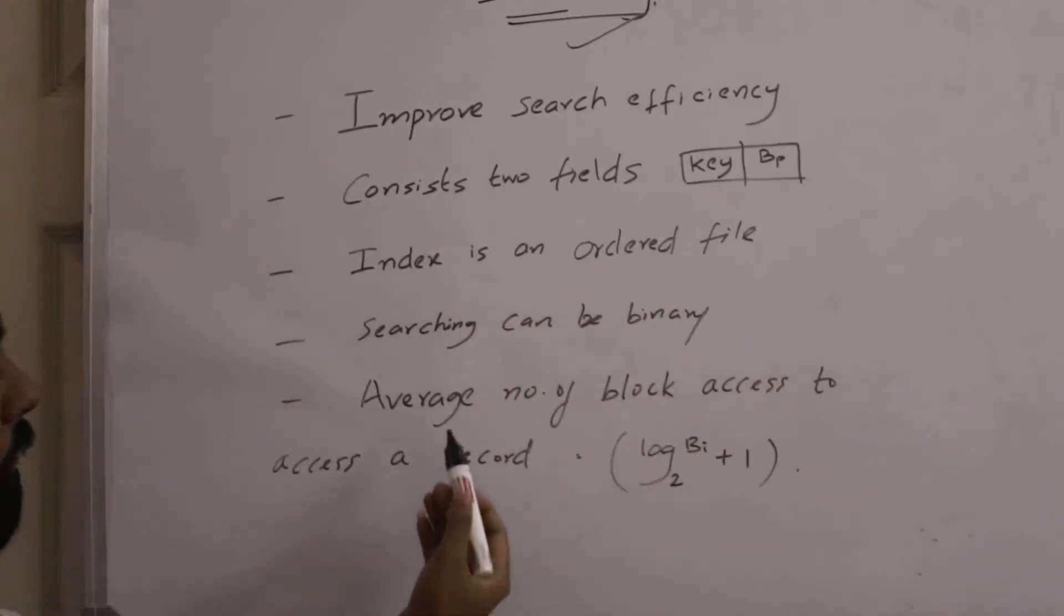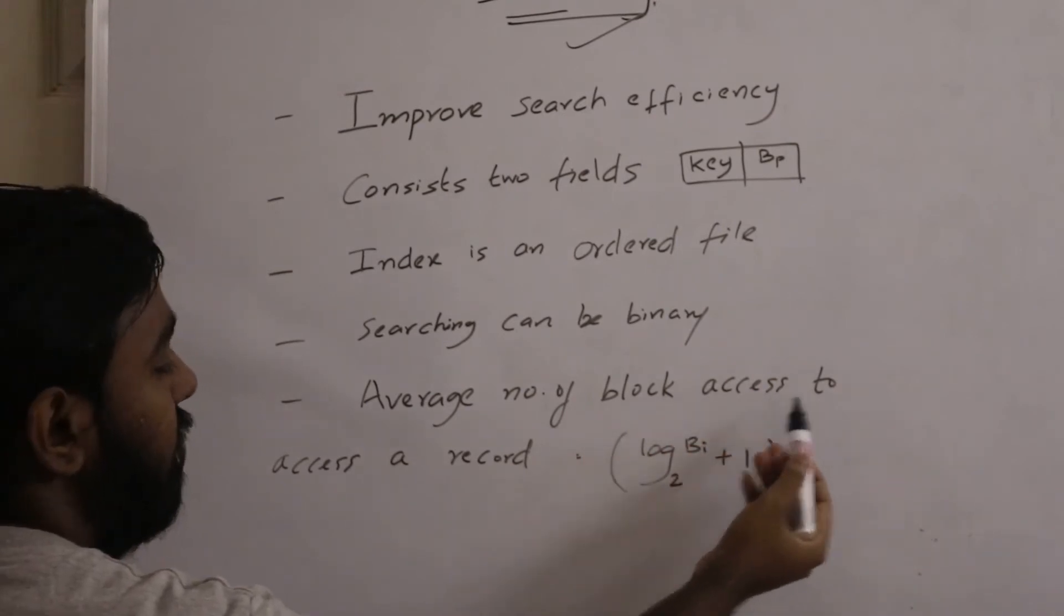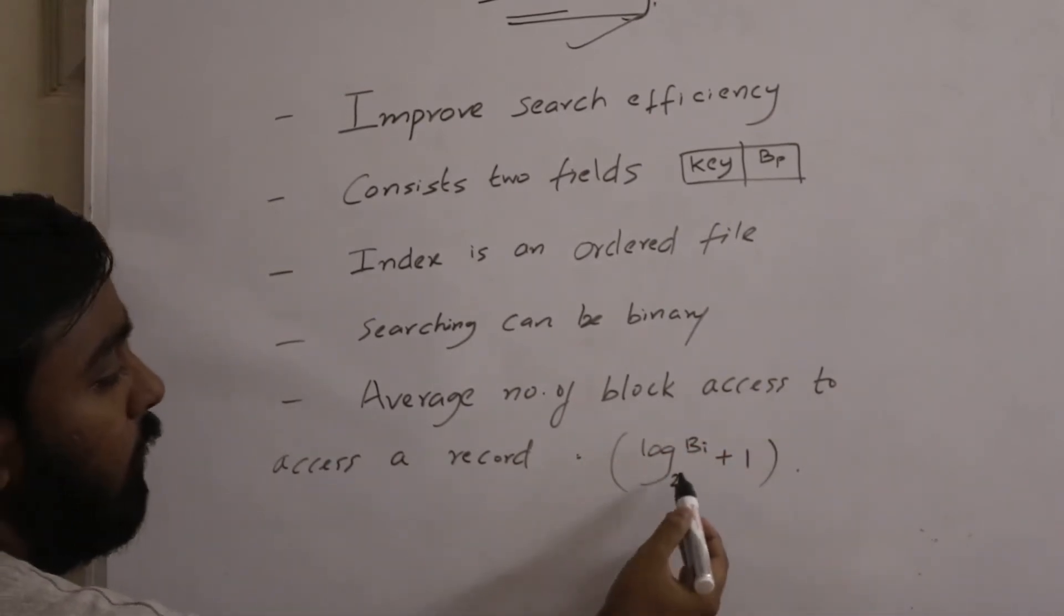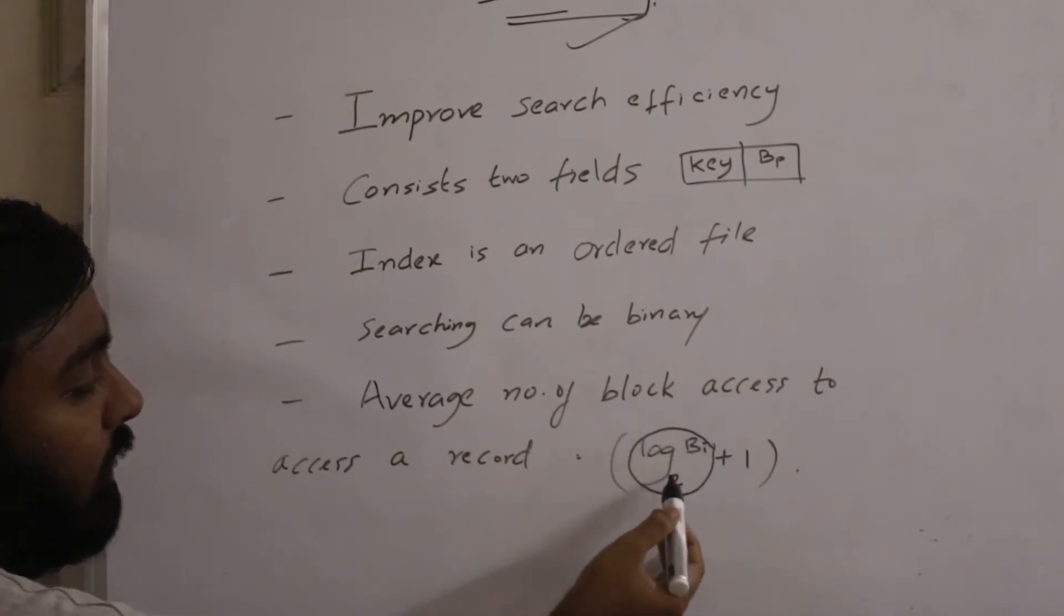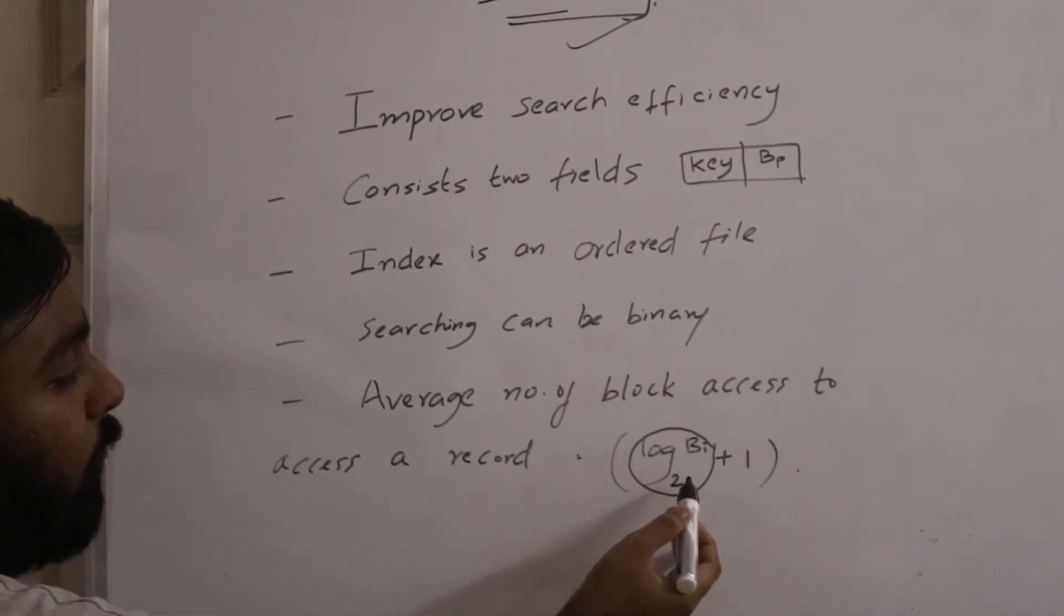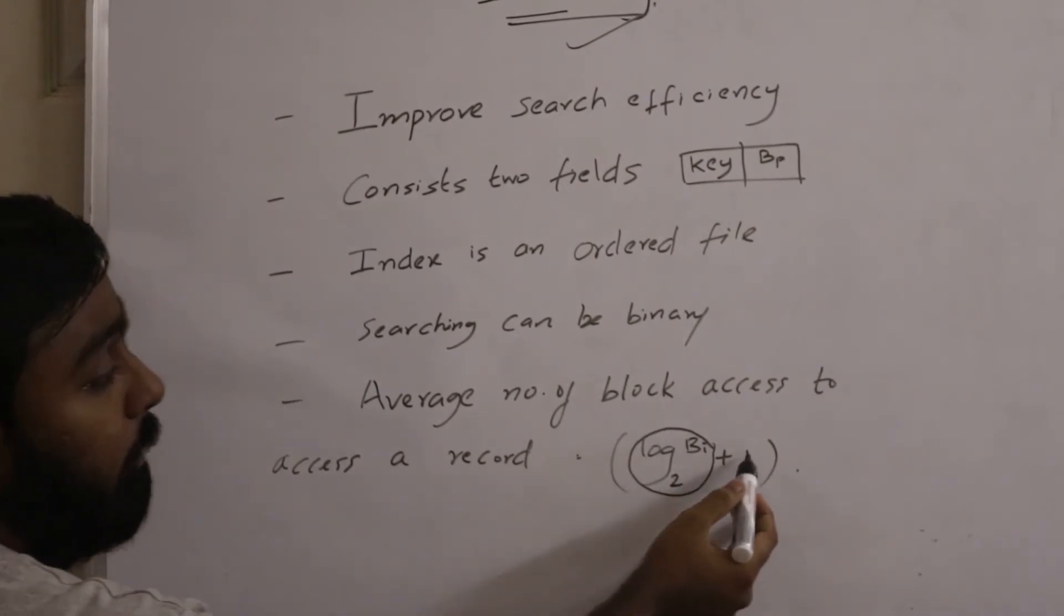And the average number of block accesses to access a record: as we know, log base 2 of BA—this is the time it takes, I mean the average number of block accesses in the index file. And the plus one...